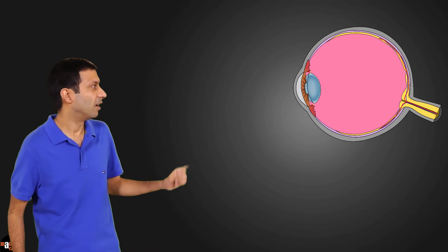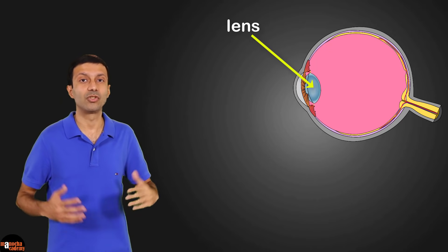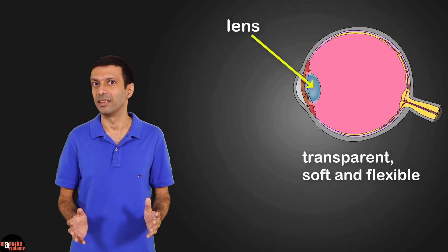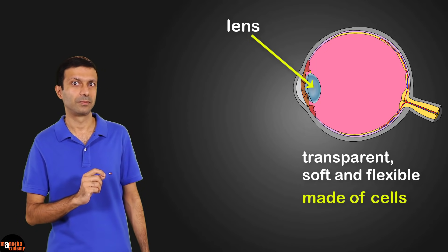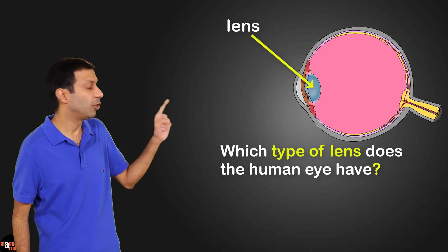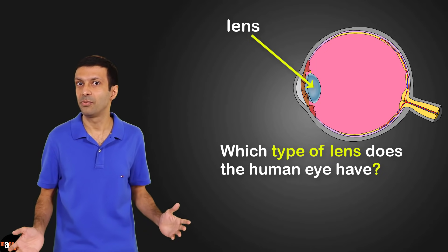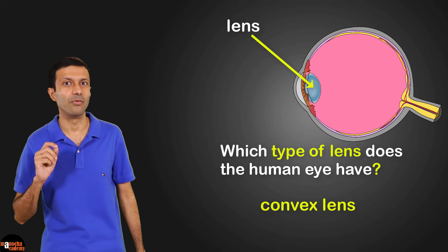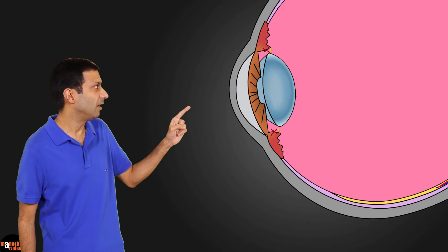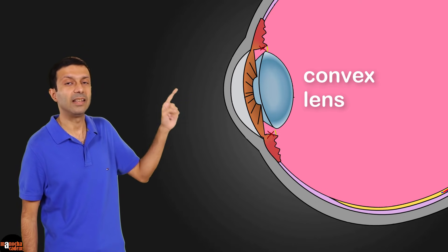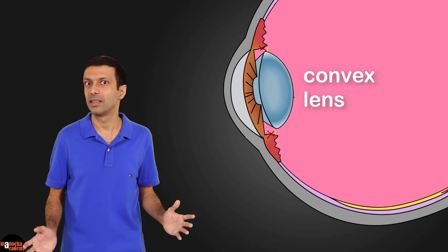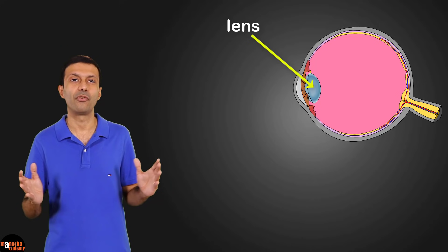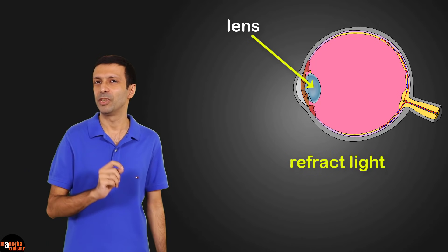Next we have the eye lens. The eye lens is transparent, soft, and flexible. Did you know that our lens is a living thing — it's made up of cells? The human eye has a convex lens. As you can see, the lens is thick in the center and thin at the edges, so it's a convex lens with a converging action. The job of the eye lens is to refract the light rays so that we get a clear image on the retina.